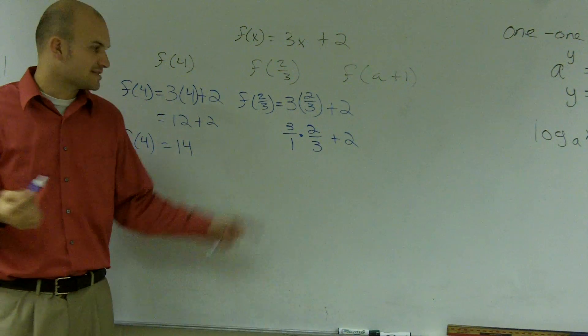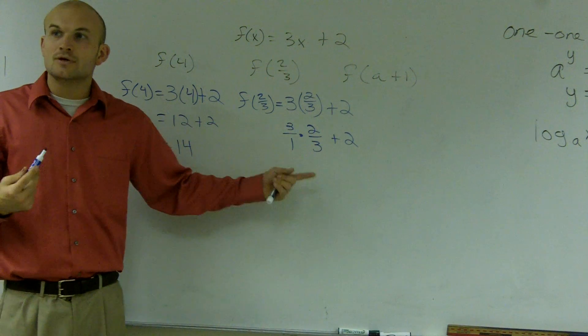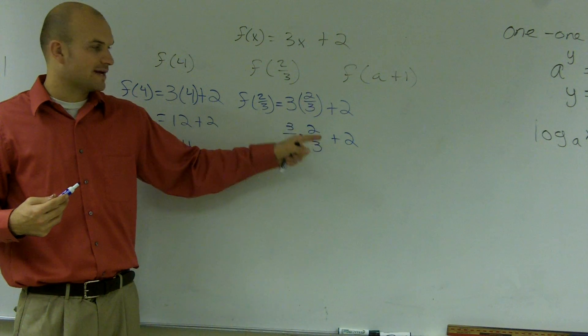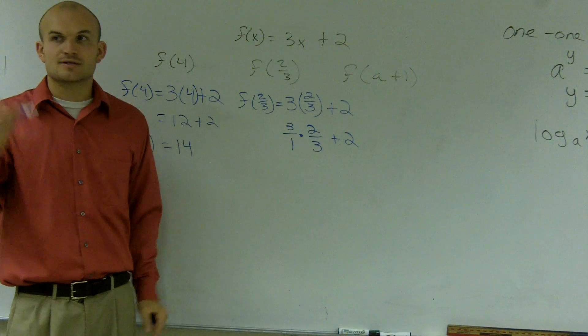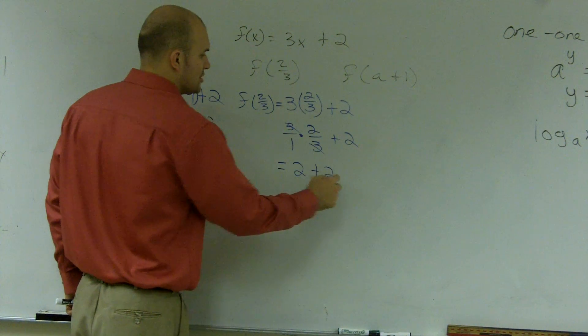Here, you can do this a couple ways. You could say I'm multiplying by 3 and dividing by 3, they cancel out. Or you could just say 3 times 2 is 6, 1 times 3 is 3. 6 divided by 3 is 2. Either way you want to look at it, your answer should give you 2 plus 2.